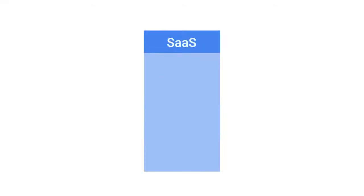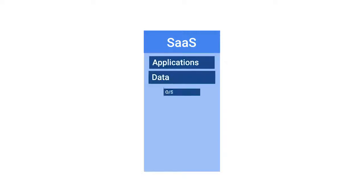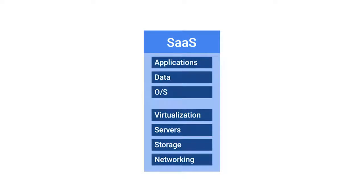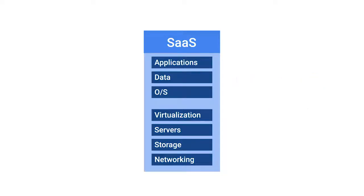The cloud alternative to maintaining your own software is known as Software as a Service, or SaaS. Instead of installing a word processor on every machine, you can use Microsoft Office 365 or Google's G Suite. These are both services that you can purchase that allow you to edit Word documents, process spreadsheets, make presentations, and more, all from a web browser. You can check out the next supplemental reading for more about SaaS providers.